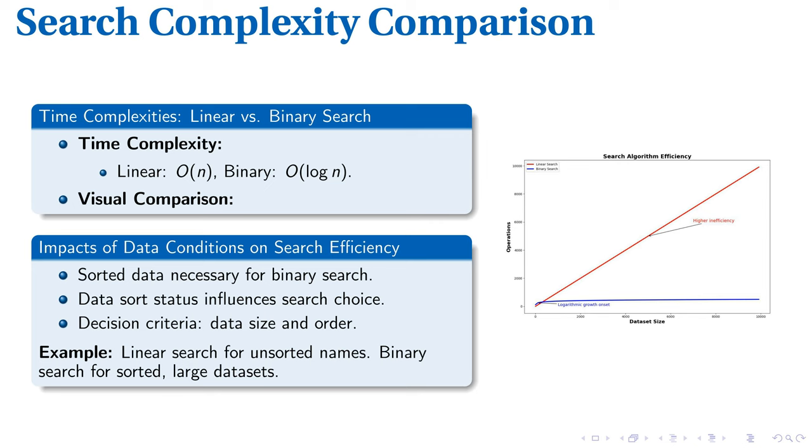Practically deciding between these search methods takes into account data condition. Binary search operates on sorted data, crucial for its dividing and discarding approach. On the contrary, linear search poses no such prerequisites, making it suitable for any list, even unsorted ones.